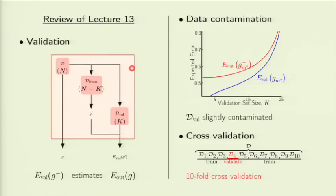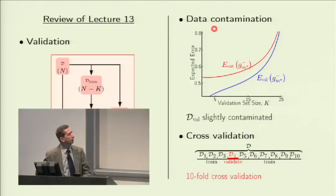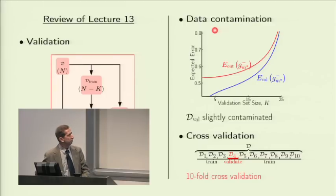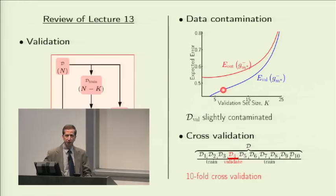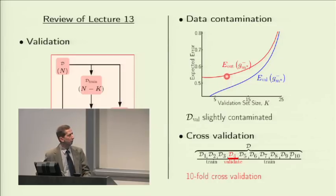This was an unbiased estimate. We can get better or worse than E out in general as far as E val estimating the performance of g minus. However, once you use the validation error for model selection — which is the main utility for validation — you end up with a little bit of an optimistic bias, because you chose a model that performs well on that validation error. Therefore, the validation error will not necessarily be an unbiased estimate; it will have a slight positive or optimistic bias.